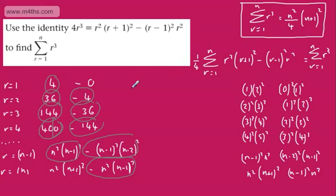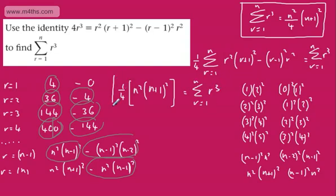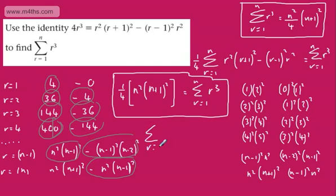So one quarter of the remaining term N²(N+1)² equals the sum from r equals 1 to N of r cubed. Tidying that up, the sum from r equals 1 to N of r cubed equals N squared over 4 times (N+1) all squared — exactly what we learned from FP1. We've just used the method of differences to prove it. Whilst it may seem inefficient, we do need to know this method and appreciate how the terms collapse.